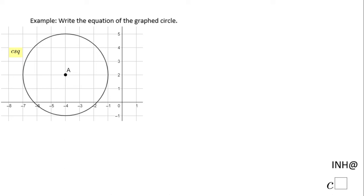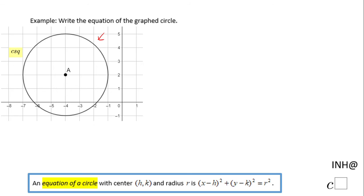Welcome back! I'm at C square. In this example we need to write the equation of the circle that you see here. For that reason, I'm going to use the equation of the circle you see here, which says x minus h square plus y minus k square equals r square.